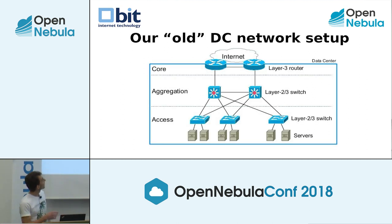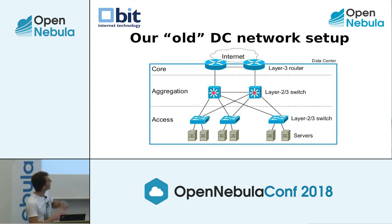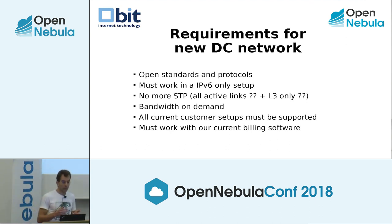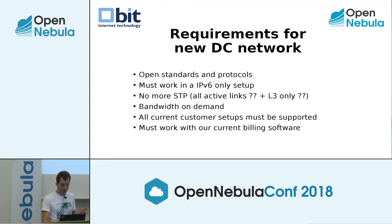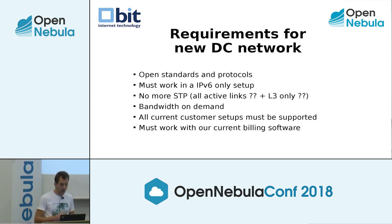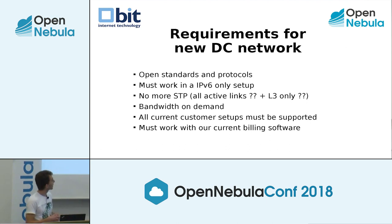Our old network had access layer below aggregation switches and layer three routers. We had issues: bandwidth limitations, spanning tree problems especially when routers have more bandwidth than the internal network causing flapping ports, slow convergence, IPv6 routing in CPU, and unsupported gear. So we wanted new standards and open protocols. Requirements: must work in IPv6-only setup, no more spanning tree, all active links, only routed, bandwidth on demand, all current customer setups supported.